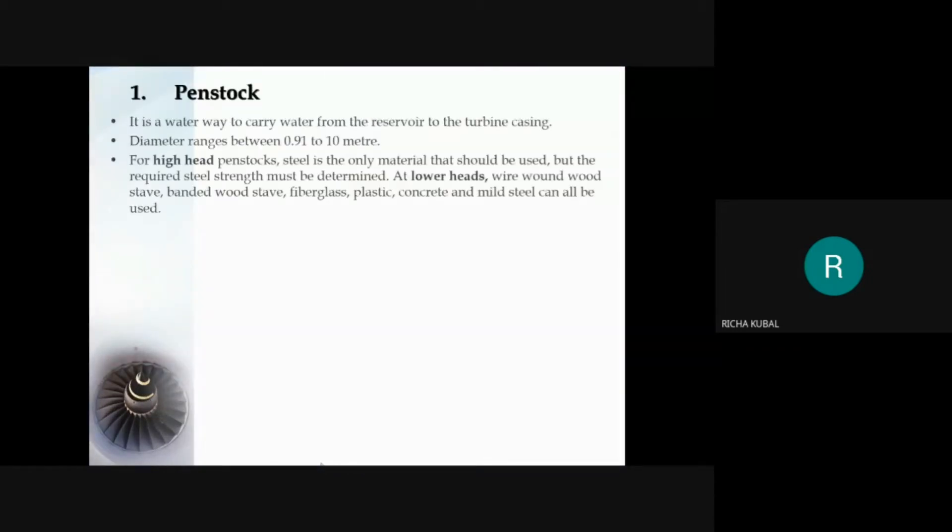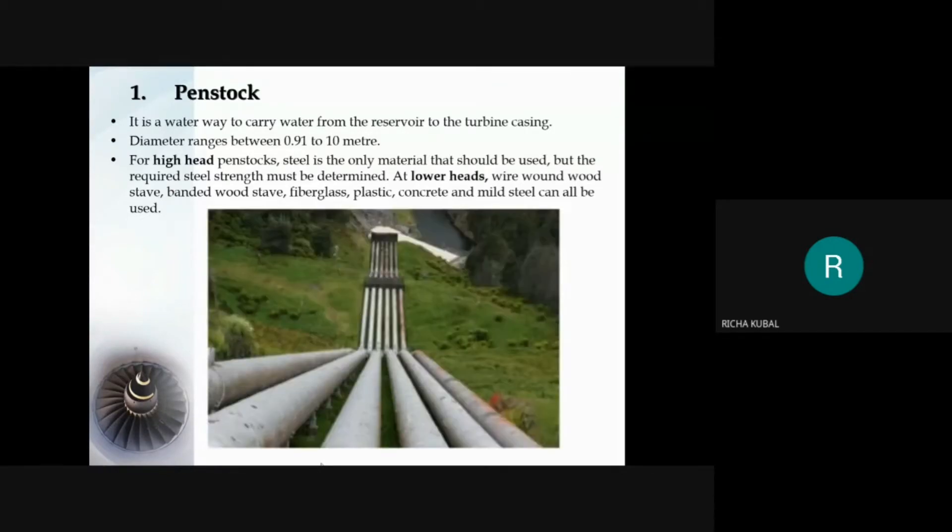First, penstock. The penstock is a pipe carrying water from head gate to water wheel. The penstock used in Francis turbine has a diameter ranging from 0.91 to 10 meters. It is an enclosed pipe that delivers water to turbine system and also controls the water flow. The material used to manufacture penstock is steel usually for high head penstock while for low head plastic, concrete, or mild steel is also used.